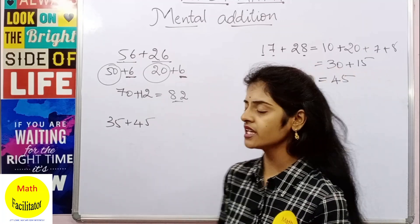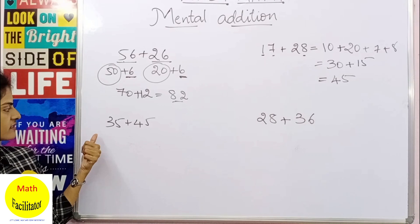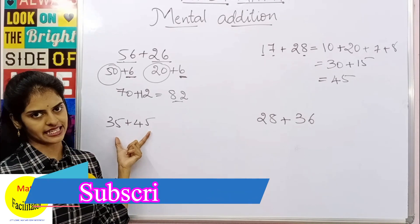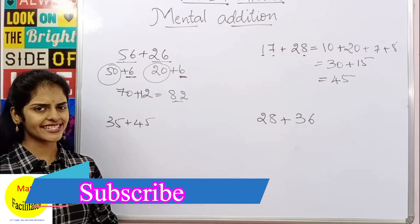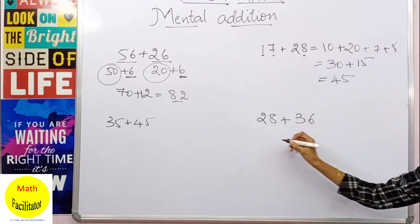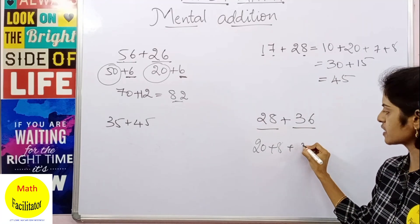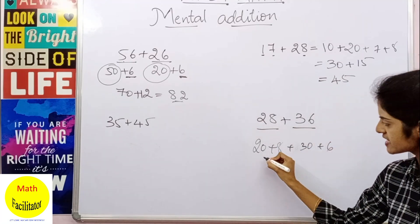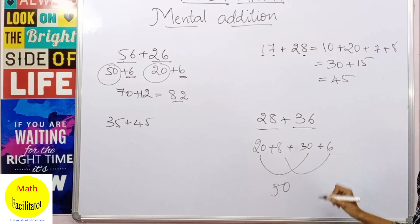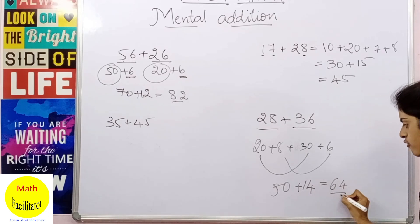Now let us take another example, 35 plus 45. Let us add this orally. So 30 plus 40 is 70, and 5 plus 5 is 10, so 70 plus 10 is 80. Isn't it easy? Now let us take 28 plus 36. 28 is nothing but 20 plus 8, 36 is nothing but 30 plus 6. So firstly you'll add 20 and 30 which is 50, and you'll add 8 and 6 which is nothing but 14. So the answer is 64.